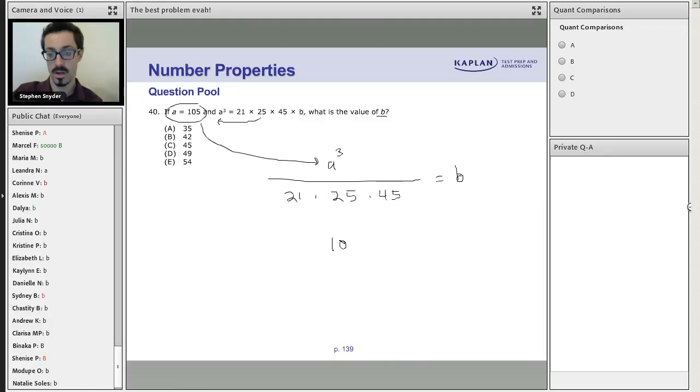We have 105 cubed over 21 times 25 times 45 equals B. And now at this point, this is where everybody else in your testing room is going to go and start clicking on that on-screen calculator.